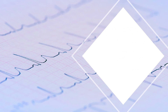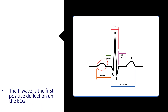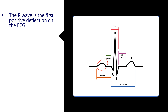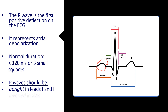Our tip for this time is going to be about the P waves. The P wave is this first positive deflection in the ECG. It represents atrial depolarization and the normal duration from the beginning till the end is about three small squares, so less than 120 milliseconds. The P waves should be upright in leads 1 and 2 and inverted in AVR.